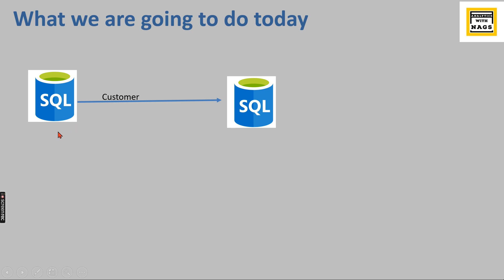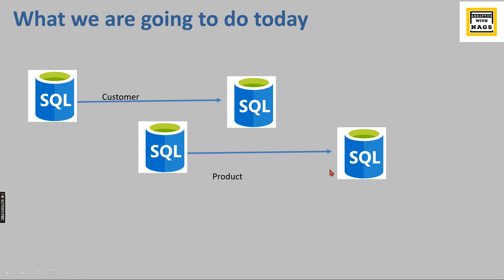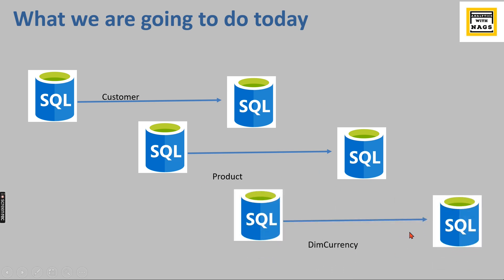Basically, we have data in one database and we have to move it into another database. That can be done with a copy data activity if there are no transformations. Now imagine you need to move other tables like Product, Dim Currency — let's say hundreds of tables. Designing a copy activity for each individual table is inefficient.